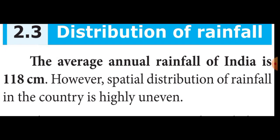The whole of Rajasthan, Punjab, Haryana, western and southern parts of Uttar Pradesh, and western Madhya Pradesh receive low rainfall — less than 100 centimeters. The rest of the areas receive rainfall ranging between 100 to 200 centimeters.